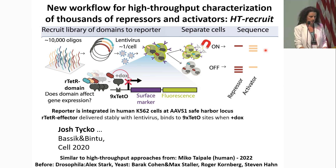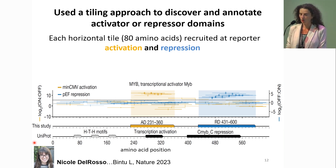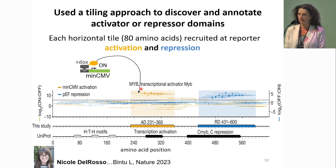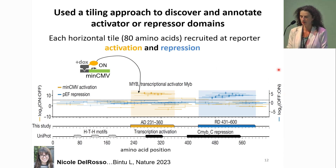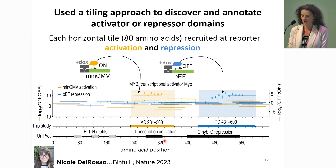This assay was developed by one of my first students, Josh Tycho, in collaboration between my lab and Mike Bassik's lab at Stanford. With this assay, we started looking across all human transcription factors. For each transcription factor sequence shown at the bottom, we tested 80 amino acid fragments and recruited them either at the minimal promoter to ask if that fragment is an activator — shown on the y-axis — or a repressor — shown as the off-to-on score. As you can see for this MBD transcription factor, we can recover both the annotated activation domain and the repressive domain from UniProt. The DNA binding domain itself gives no signal because we replaced it with our own inducible DNA binding domain.